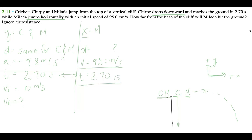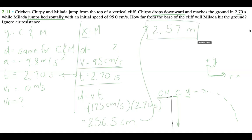Now we know that distance for x is speed times time. We have 95 centimeters per second times 2.70 seconds, which makes 256.5 centimeters, equal to 2.57 meters. Counting significant digits, there's three here, so that's 2.57 meters in the x direction. That's how far from the base of the cliff Milada will travel.